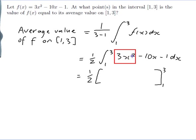For each power term, I increase the power by 1 and divide by the new power. The constant 3 just stays there — and this gives us x cubed for the first term.